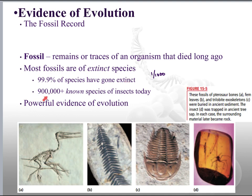That should tell you about the sheer number of different species that did exist. Just talking about insects alone, we have close to a million known species of insects. If you do the math and realize that only one-thousandth of species from the past survived until today, you're talking about just insects alone having somewhere over a billion different species over time.